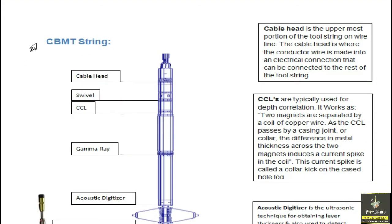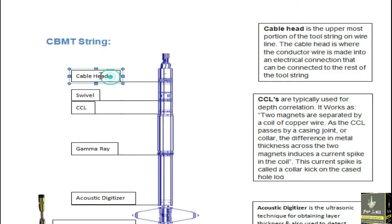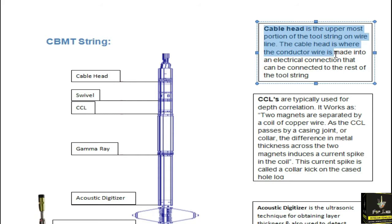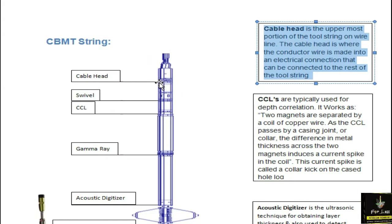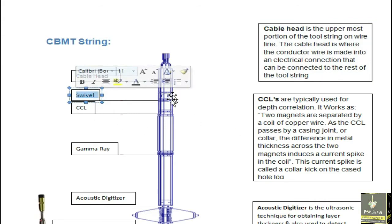This is the CBMT tool string. The uppermost portion is the cable head, which is where the conductor wire is made into an electrical connection to connect to the rest of the tools — it bridges the wire and the tool string together. Below that is the swivel, which is a crossover connecting the cable head and the tool string.